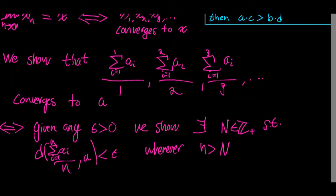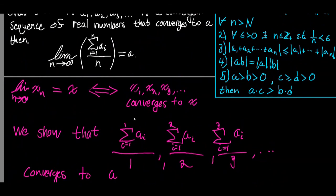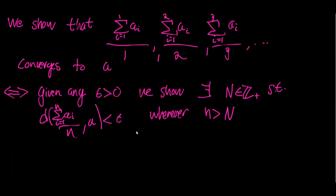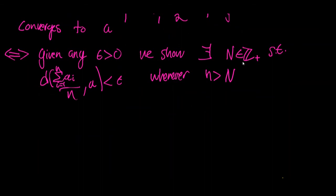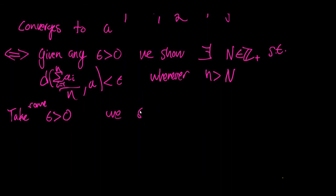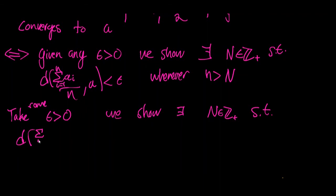We've reworked this statement into a more tractable form. So let's take some epsilon strictly greater than zero — this is a general epsilon, the only property we've given it is that it's strictly greater than zero. We want to show that there exists an N in the positive integers such that this distance is strictly less than epsilon whenever n is strictly greater than N. If we can show it for this general epsilon, then we've shown it for all epsilon strictly greater than zero.